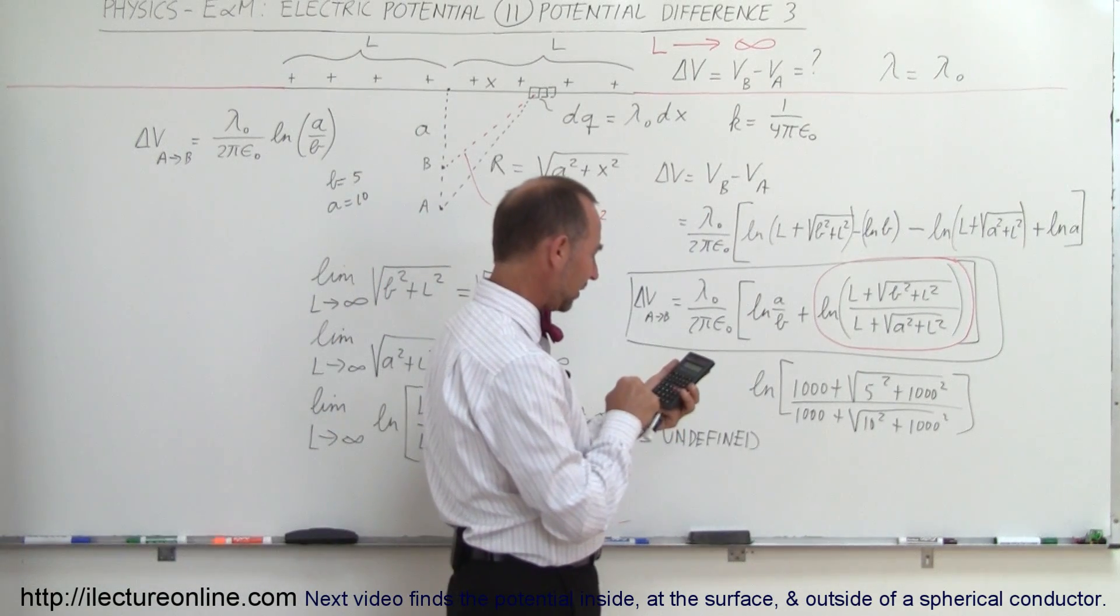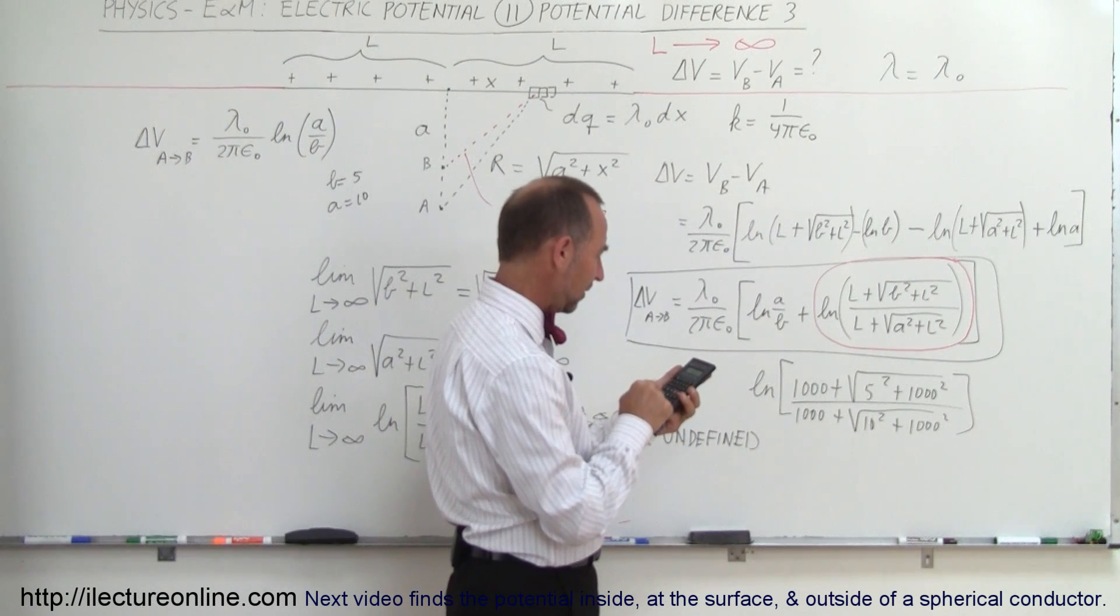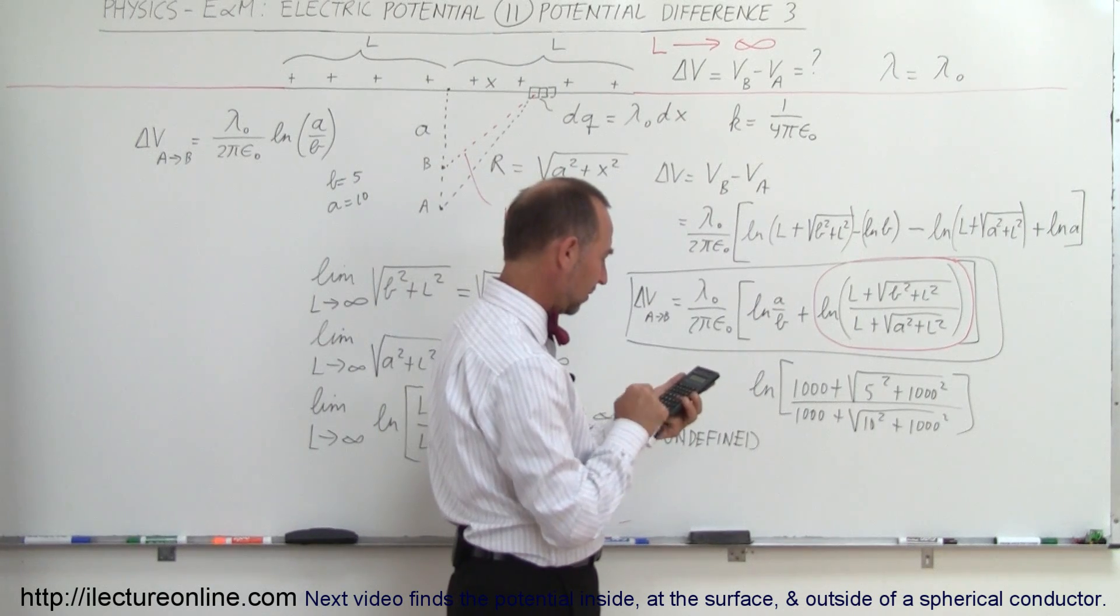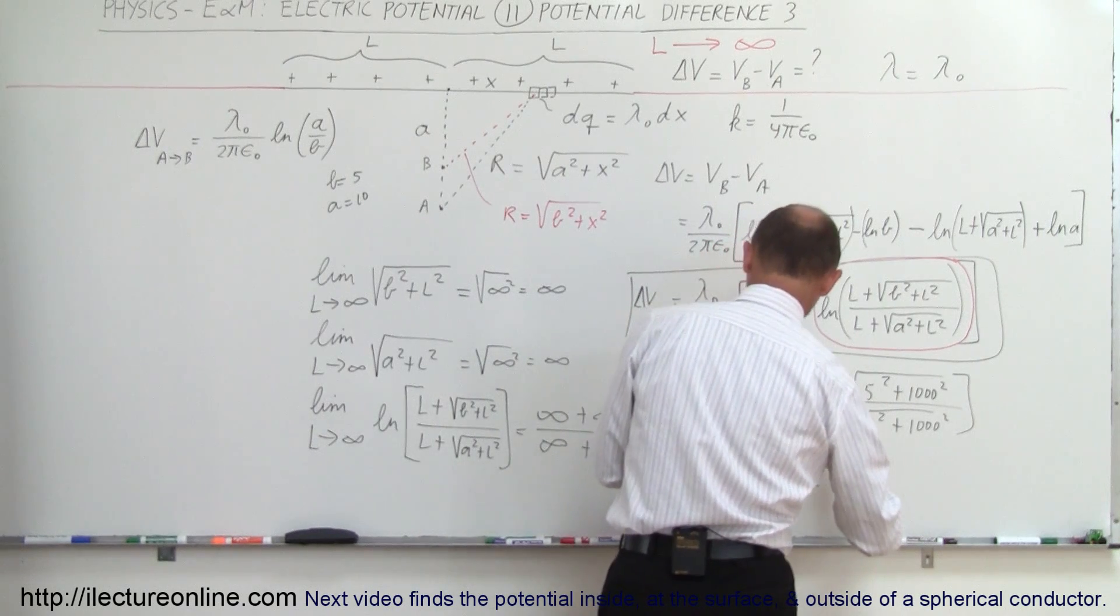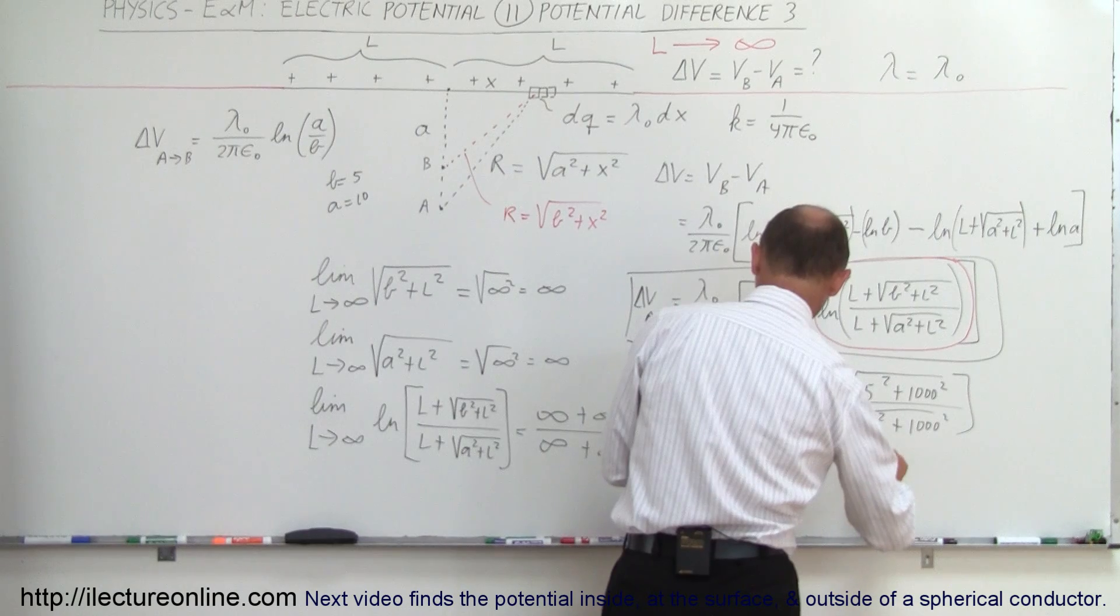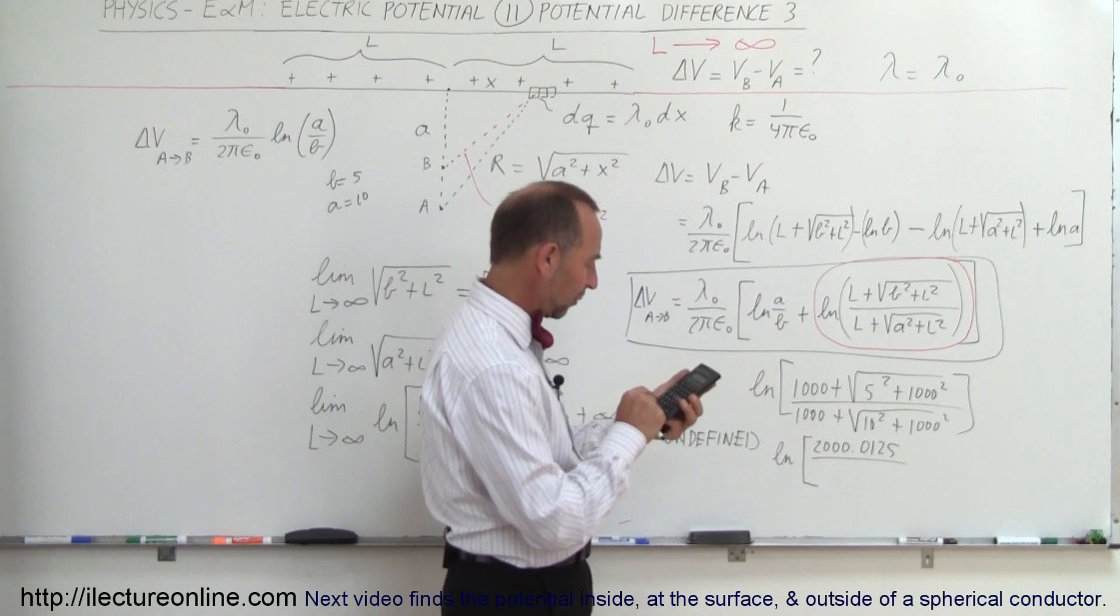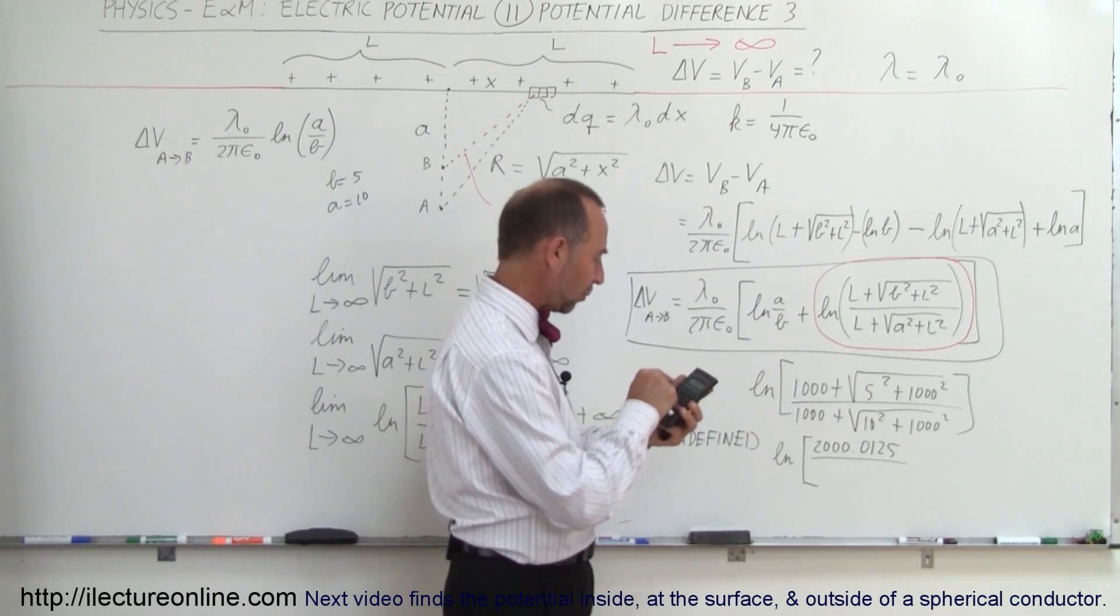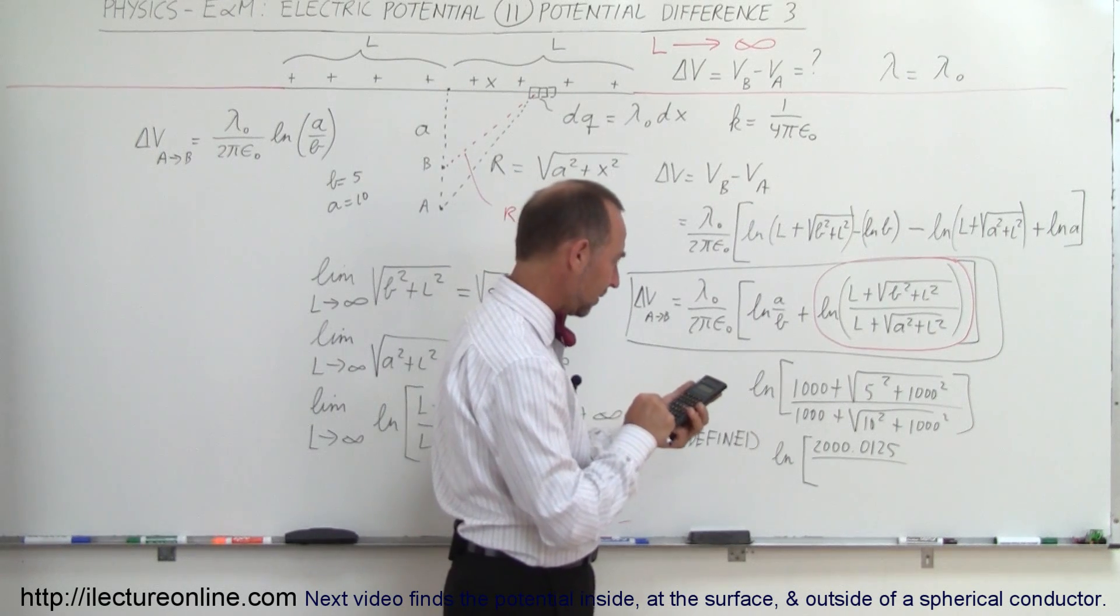So I end up with five squared plus a thousand squared divided by a thousand plus the square root of 10 squared plus a thousand squared. And then if we evaluate that number, you'll see that we get something that is very small, close to zero. Let's give it a try. So we have a million twenty-five, take the square root of that, plus a thousand. So we end up with, let me just write it in, the natural log of that would be two thousand point zero one two five divided by—plug in the lower quantity—so we have a million one hundred, take the square root of that, plus one thousand.